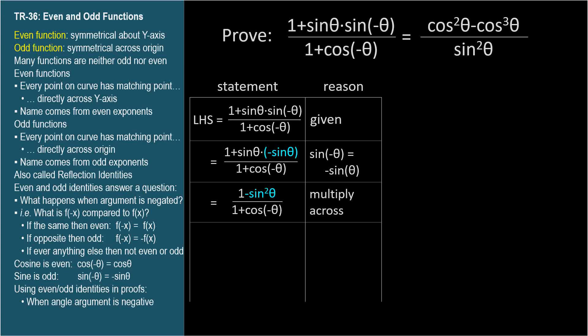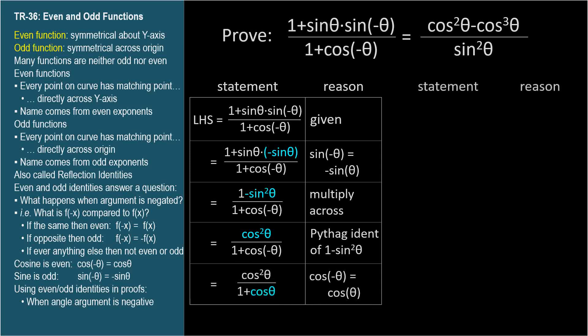The numerator 1 minus sine squared theta is identical to cosine squared theta by the Pythagorean identity. In the denominator, cosine negative theta equals cosine theta, so we make that substitution.